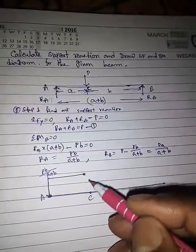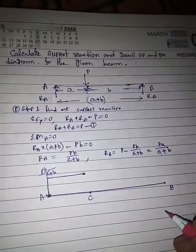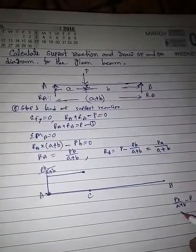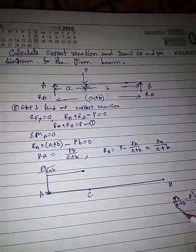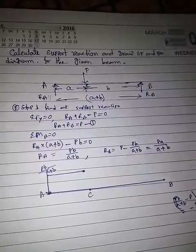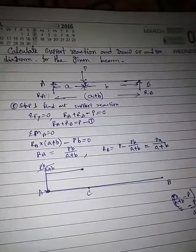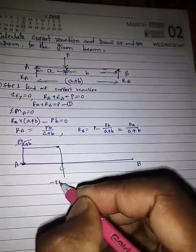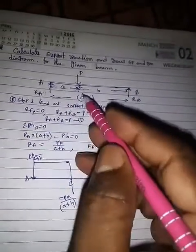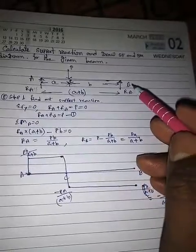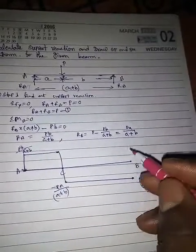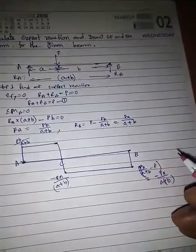At point C there is a downward point load P, so the shear force value becomes Pb/(a+b) minus P, which equals minus Pa/(a+b). From point C to point B there is no load, so this value continues. At point B the upward force RB equals Pa/(a+b) is applied, bringing the shear force back to zero. This completes the shear force diagram.